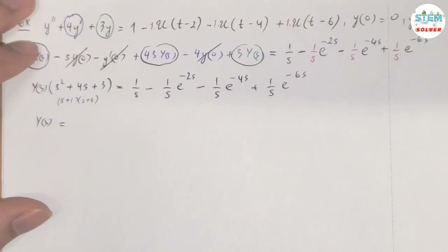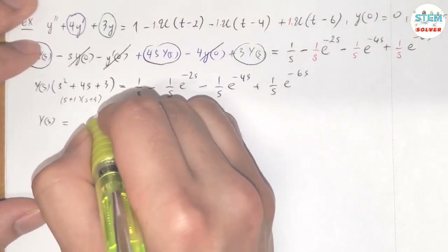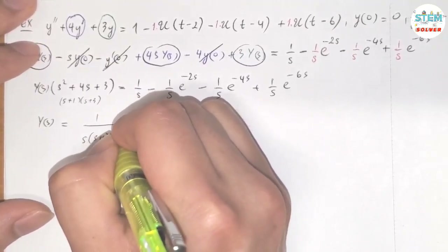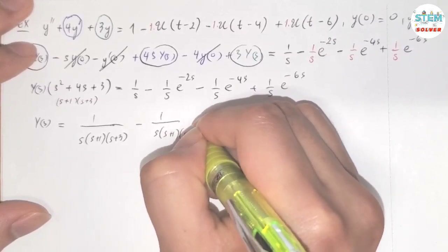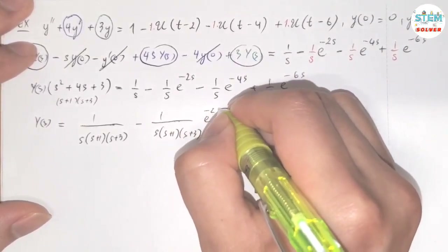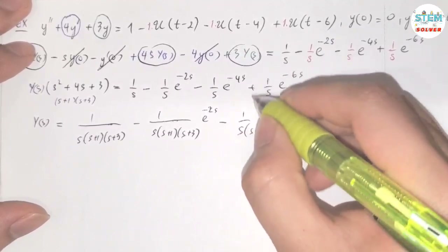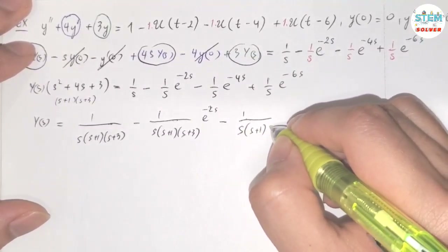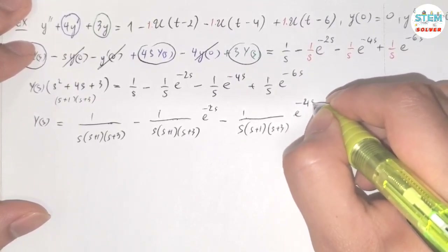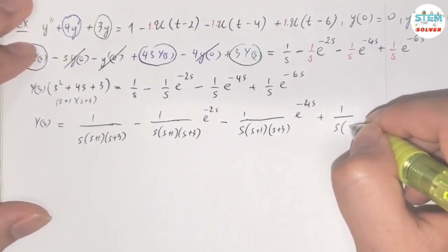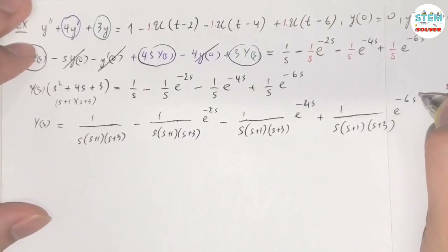So Y(S) equals 1/[S(S+1)(S+3)] minus (1/S)·e^(-2S)/[(S+1)(S+3)] minus (1/S)·e^(-4S)/[(S+1)(S+3)] plus (1/S)·e^(-6S)/[(S+1)(S+3)].